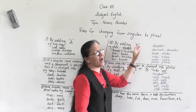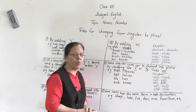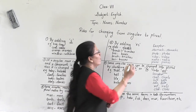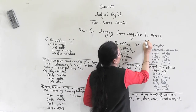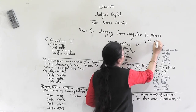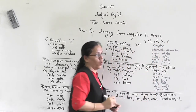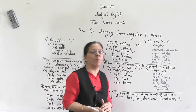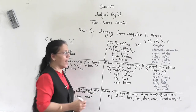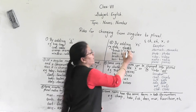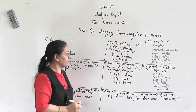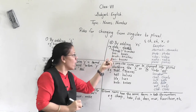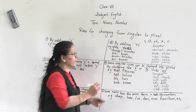Rule number two: by adding 'es' at the end of a singular noun which ends in s, ss, ch, sh, x, or o. These nouns take 'es' at the end to make them plural. For example, 'glass' ends in 's', so we add 'es' to make 'glasses'. 'Bunch' ends in 'ch', so after adding 'es' it becomes 'bunches'.